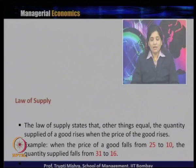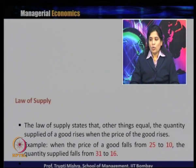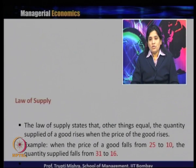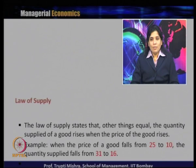What is the law of supply? As we know price and quantity demanded are always inversely related, other things remaining constant - the ceteris paribus principle, meaning everything else is equal. The law of supply states that the quantity supplied of a good increases when the price of the good increases. There is a positive relationship between price and quantity supplied. More is the price, more is the quantity supplied. In case of demand there is an inverse relationship - more is the price, less is the quantity demanded, and less is the price, more is the quantity demanded. In case of supply, more is the price, more is the quantity supplied.